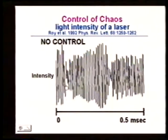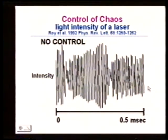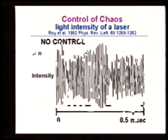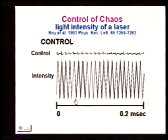Shown here is actual experimental data: the intensity of the light output of a laser as a function of time, varying in a very irregular way. It's possible to use control-of-chaos methods to control the output of this laser—these methods are based partly on understanding the phase space and partly on understanding the physics. They predict how you should vary the voltage or some parameter to change the light output. And that was done here—using the control parameter, they made the laser vary in a very periodic way.